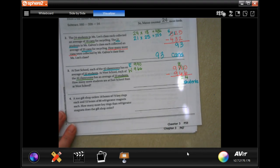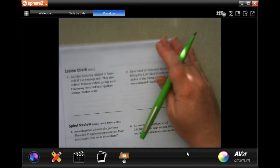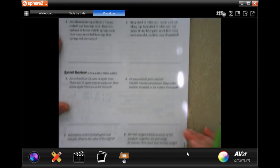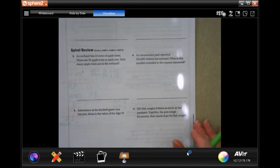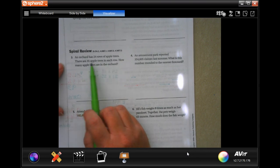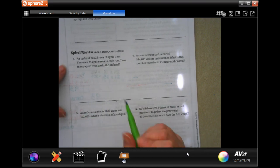You guys are going to do number 4. You totally can. You're also going to go ahead and do the lesson check on the back, 1 and 2. We're going to go down and do the spiral review. An orchard has 24 rows of apple trees. There are 35 apple trees in each row. How many apple trees are in the orchard?